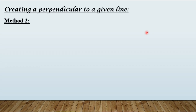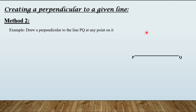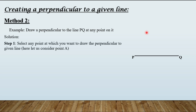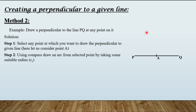Let us see the second method. I am taking the same question as an example to avoid any confusion. So this is the line PQ given to us. Step number one: select any point at which you want to draw the perpendicular to the given line, considering the same point A. Step number two: using compass, draw an arc from the selected point A with a suitable radius R1.